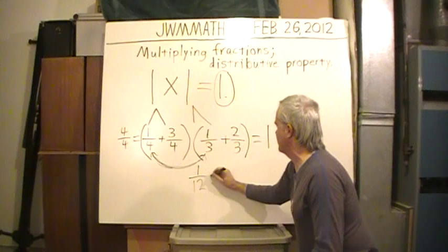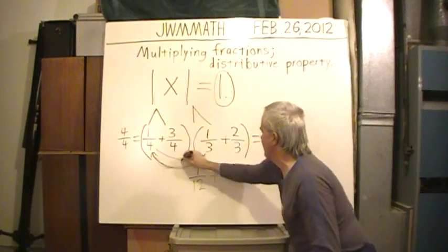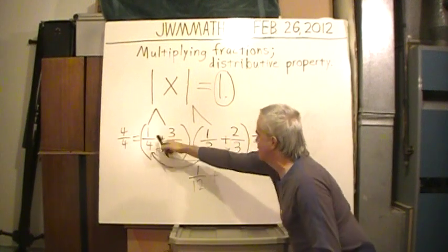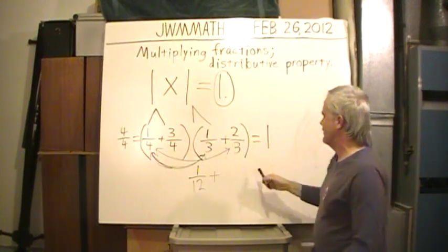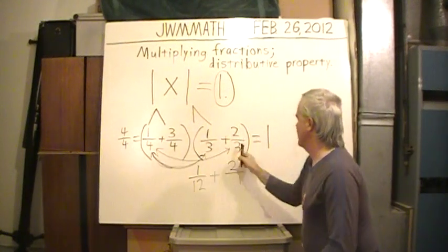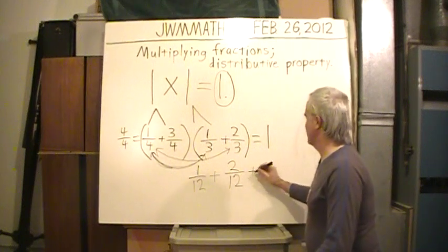So, we have 1/12 so far. And I'm going to multiply the 1/4 by the 2/3 over here. Multiply that first fraction by the second one in the second parenthesis. 1 times 2 is 2. 4 times 3 again 12.